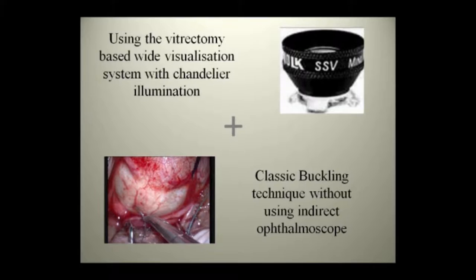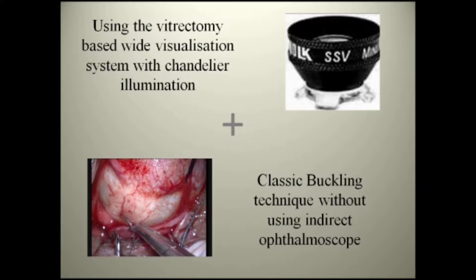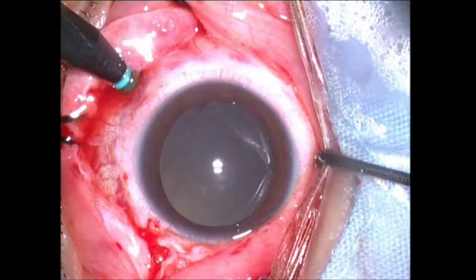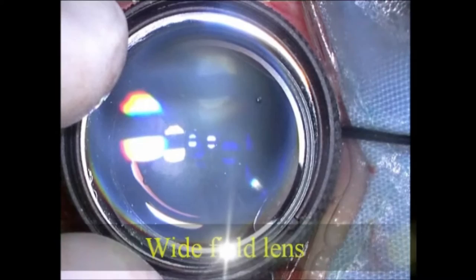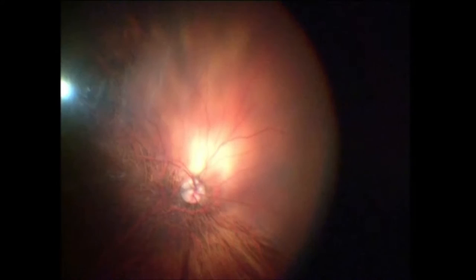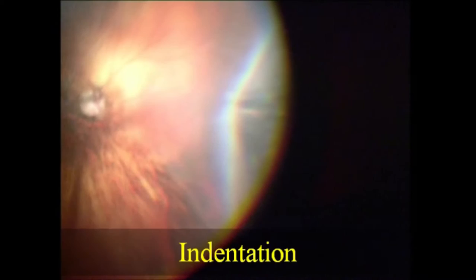We decided to combine the advantages of wide field visualization and chandelier illumination to perform classical buckling surgery without using indirect ophthalmoscopy. After tagging the muscles, the chandelier light is inserted in the inferior temporal quadrant and a self-retaining contact wide field lens is placed on the cornea. Once the fundus view appears, peripheral indentation can be carried out to locate the breaks and perform cryopexy to them.